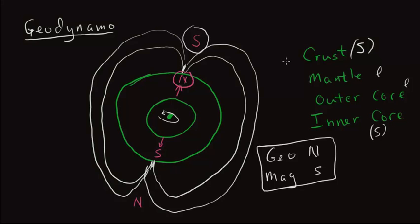Okay, so, without going into any further detail, geographic north is the magnetic south. Geographic south is the magnetic north. And the magnetic field is caused by the rotation of the liquid outer core.